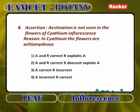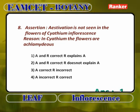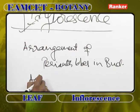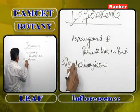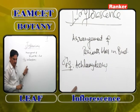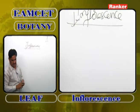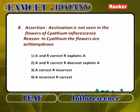Estivation is not seen in the flowers of cyatheum — this is asked several times in exams. Estivation is the arrangement of perianth lobes in bud condition. In cyatheum, male and female flowers are achlamydeous — they do not possess calyx and corolla. If calyx and corolla are absent, there is no question of estivation. So both A and R are correct, and R perfectly explains A.